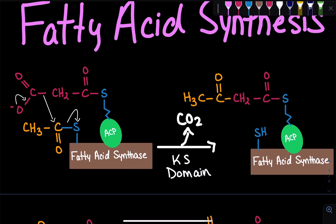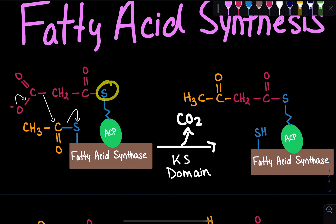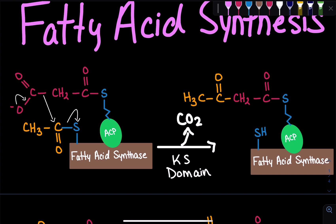The difference is that the acetyl group's sulfur is from a cysteine residue on the fatty acid synthase, whereas the malonyl group's sulfur is part of the ACP. The ACP is a protein with a serine residue bound to a phosphate, and that phosphate has a longer arm attached to it, similar to coenzyme A, with a terminal sulfur.